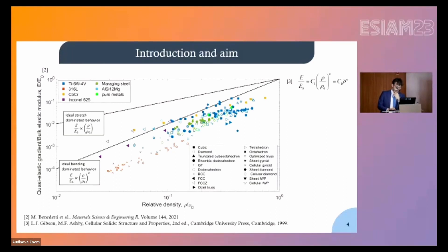Here we have collected a large amount of data from the literature, showing that the Ashby equations are able to capture most of the experimental data. Interestingly, all data are concentrated near the linear trend in double logarithmic scale predicted for bending-dominated behavior, even though most of these cells are nominally categorized as stretch-dominated. This highlights the influence of geometric deviations from the as-designed geometry, producing a shift from stretch-dominated to bending-dominated behavior.